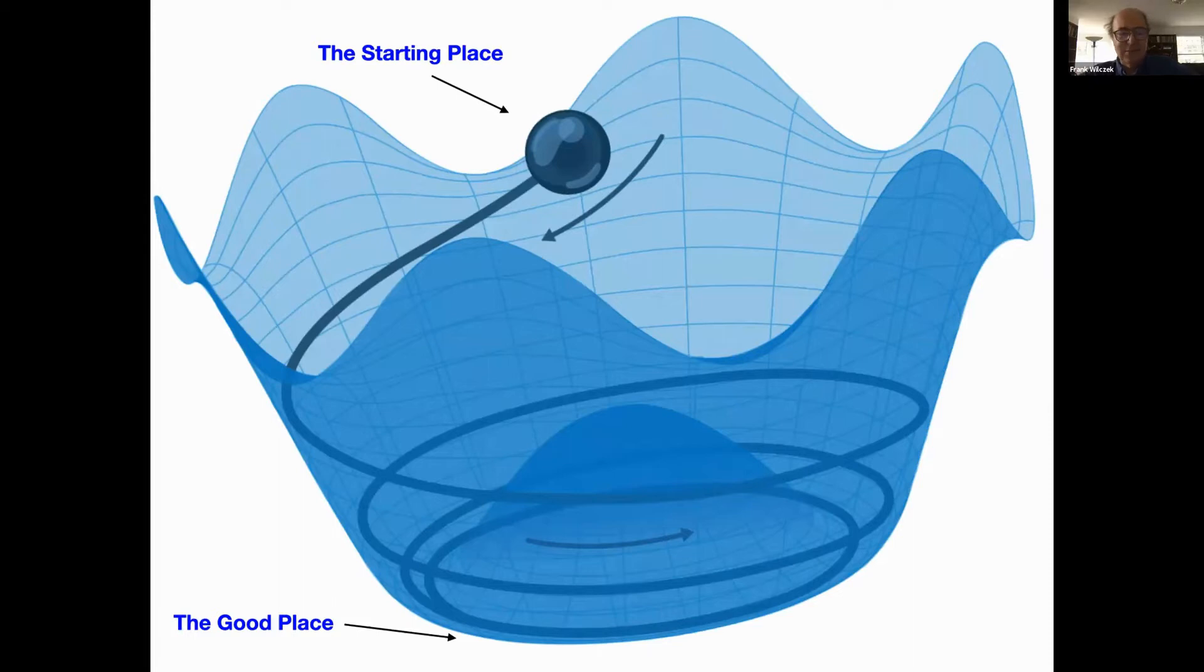So, this is the vanishing of the theta parameter that Helen mentioned. And their idea was that one way to have that happen is that the good place is a place where energy is minimized. It's where things want to settle down to. So wherever you start, within the framework of the symmetry they proposed, you will end up at the good place. But on the way down some interesting things can happen as you'll see.